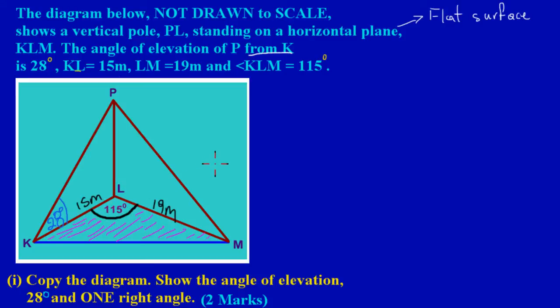Having identified all that information, they're asking us in part one to copy the diagram, show the angle of elevation of 28 degrees and one right angle — and that's two easy marks. So let's quickly get into that.